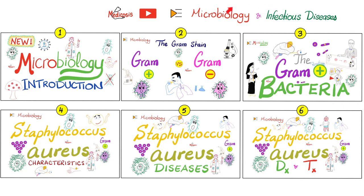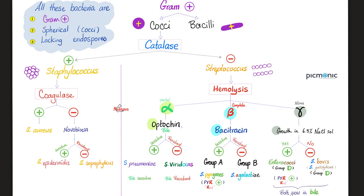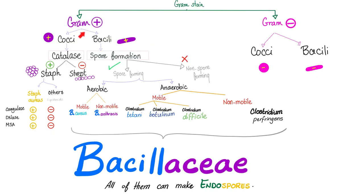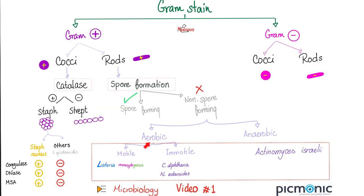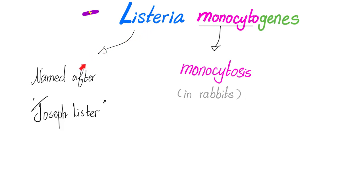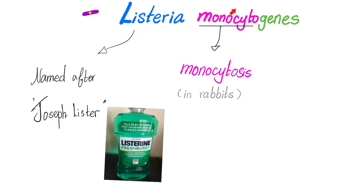Please watch the videos in this playlist in order. We talked about the gram-positive cocci before. As for Listeria monocytogenes, it's a gram-positive rod — non-spore forming, aerobic, and motile. Why do we call it Listeria? It's named after Joseph Lister. And monocytogenes, because you find lots of monocytes when Listeria infects rabbits.